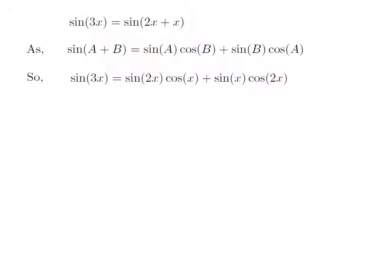Replacing a by 2x and b by x in the above identity, sine of 2x plus x — that is sine of 3x — is equal to sine of 2x into cosine of x plus sine of x into cosine of 2x.